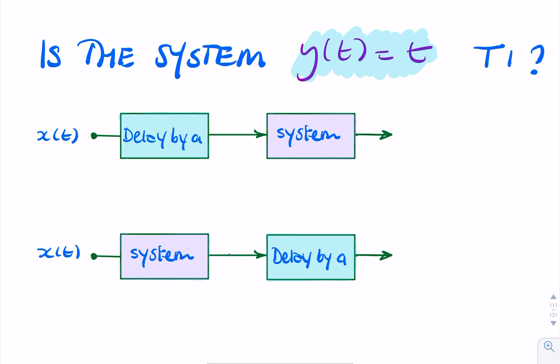But we can demonstrate this mathematically. If x of t is delayed by a seconds, the output of that block would simply be x of t minus a. And if that then goes into my system, then the output is what we're told here.